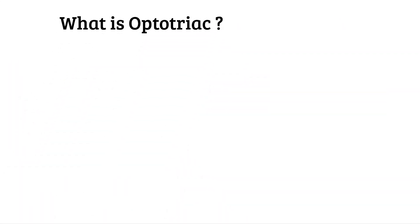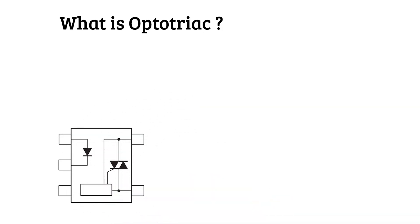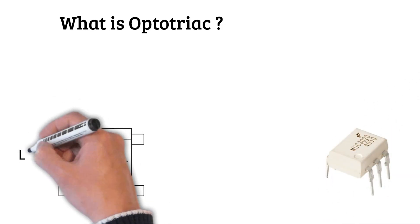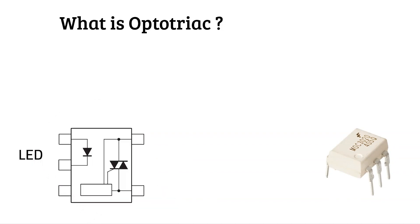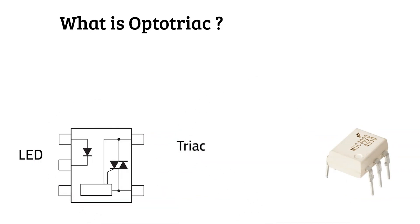But what is the opto-triac? This is the schematic of one opto-triac, and this one is the real one. There is one LED with the anode and cathode, and one triac that works like a switch.